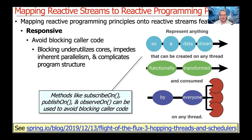In RxJava and Project Reactor, this is handled via operators like subscribe on, publish on, and observe on. What these do is change the context in which data elements in streams are processed, by moving them transparently back and forth between different threads. You can hop between different threads, different types of threads, and different pools of threads in a very fine-grained, controllable way.